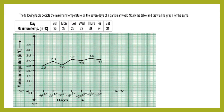The following table depicts the maximum temperature on the 7 days of a particular week. Study the table and draw a line graph for the same. Day and temperature in degree Celsius. The day is taken along the x-axis and maximum temperature in degree Celsius along the y-axis. We take one division as 5 degree Celsius.